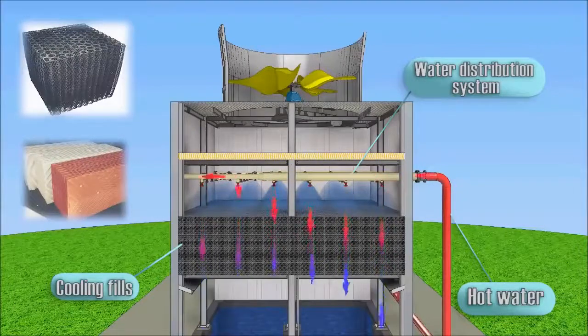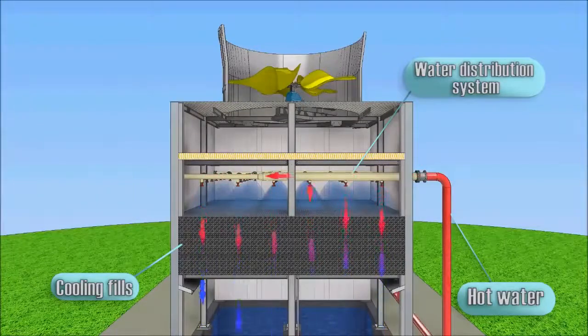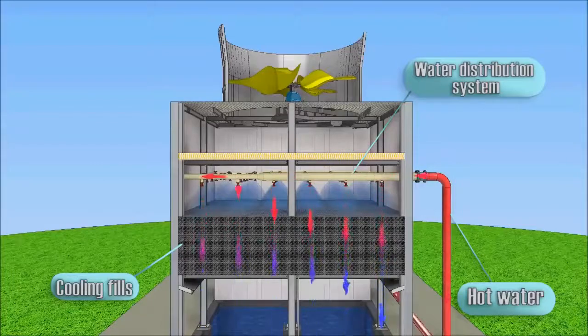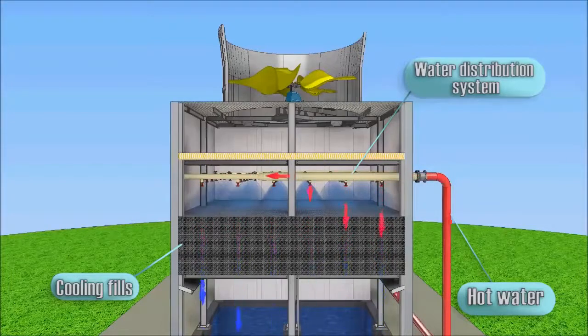From the surface of the water film, evaporation occurs in the air flow. The larger the surface area of the fills, the more intensive is the evaporation of water and the more efficient is the cooling tower.